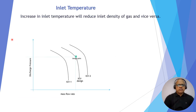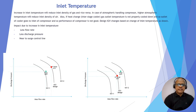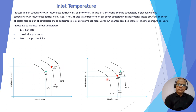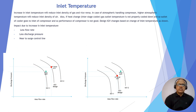Second case: inlet temperature. Increasing inlet temperature will reduce inlet density and vice versa. At the design point (x = mass flow rate, y = discharge pressure), when temperature decreases the IGV curve shifts upward — more flow and more pressure rise. Due to increase of inlet temperature, the impact will be less flow, less pressure, and nearer to surge. Lower temperature gives the reverse, beneficial effect.